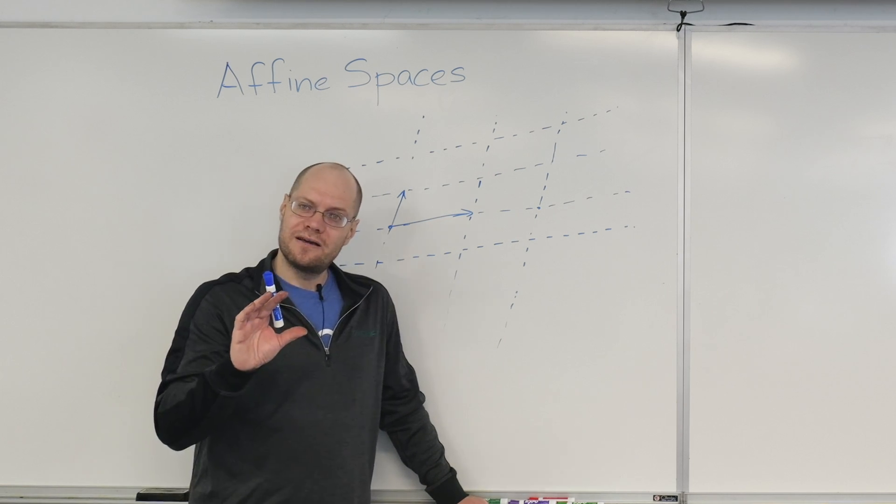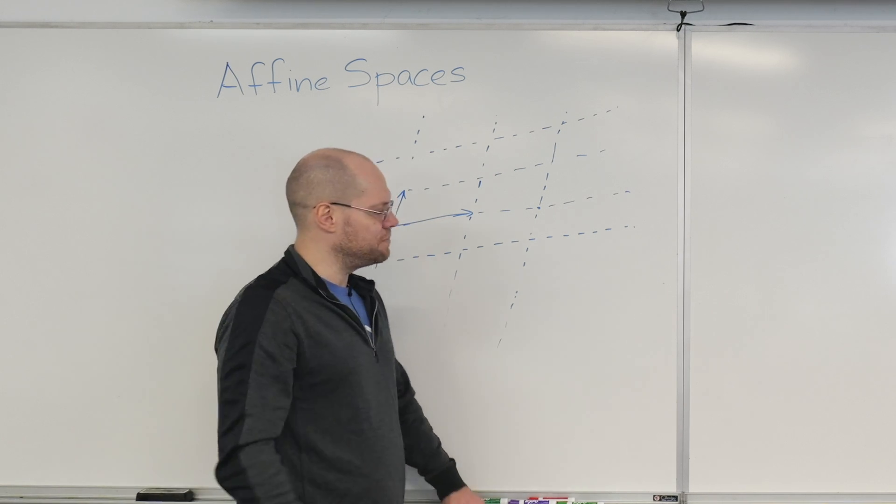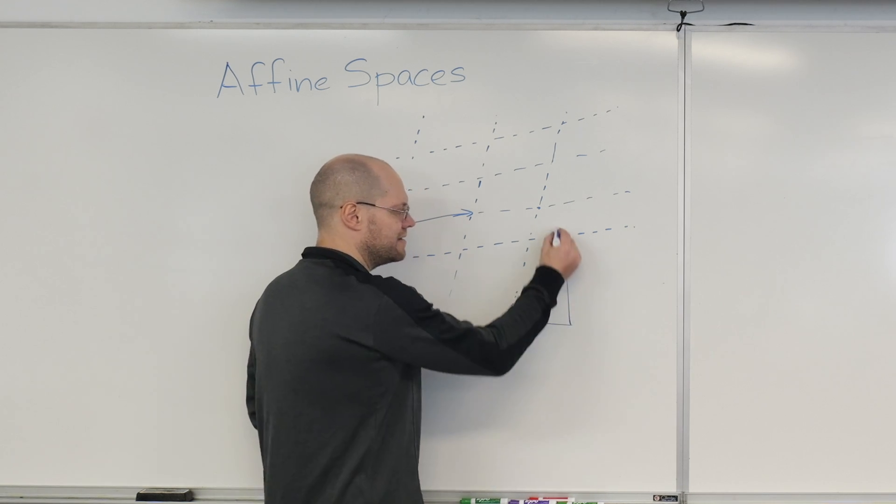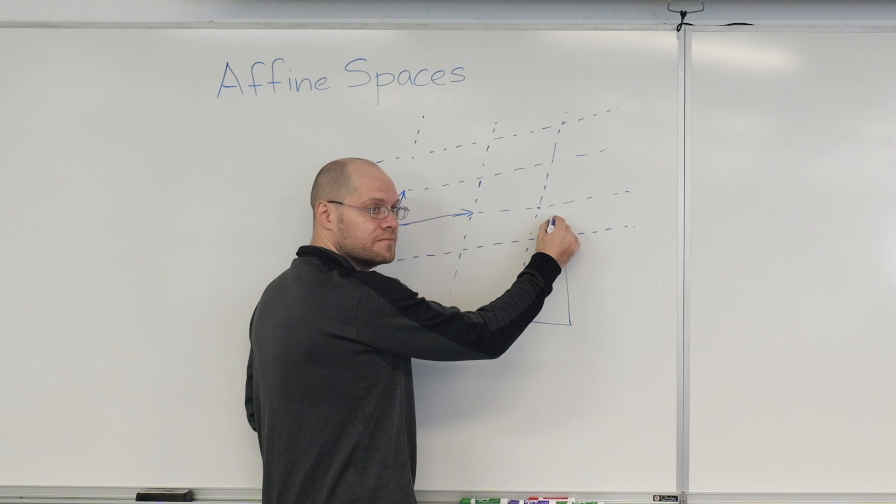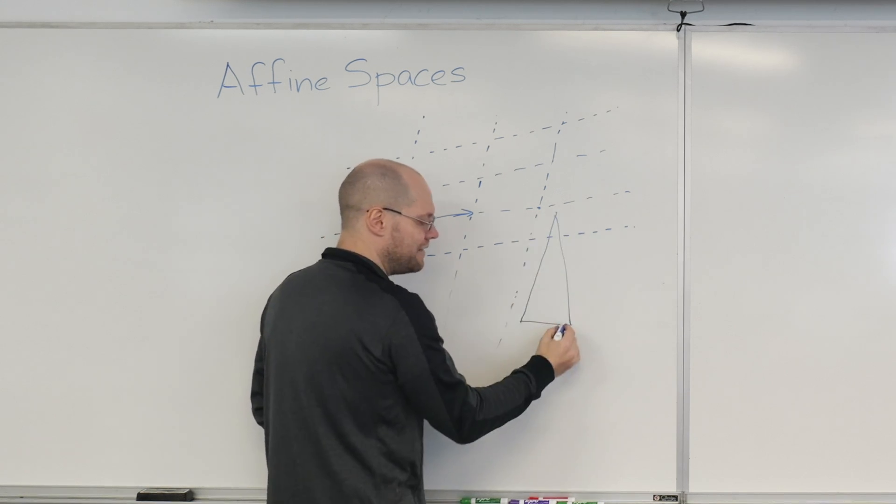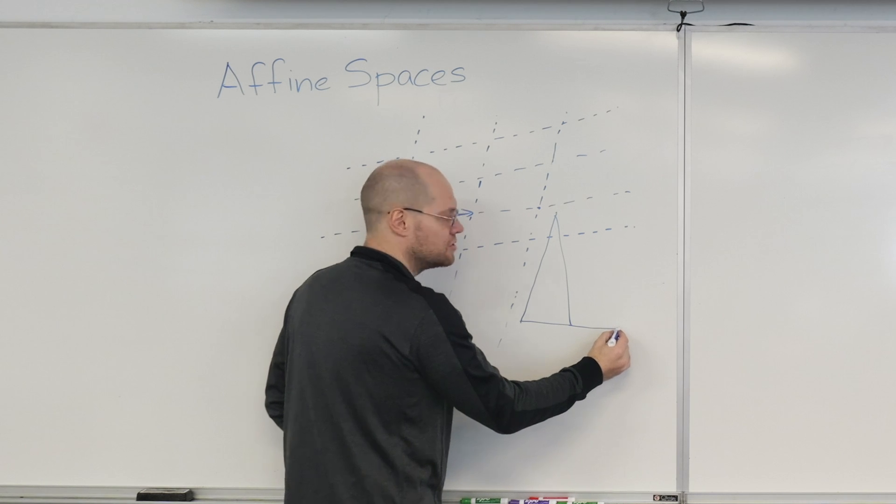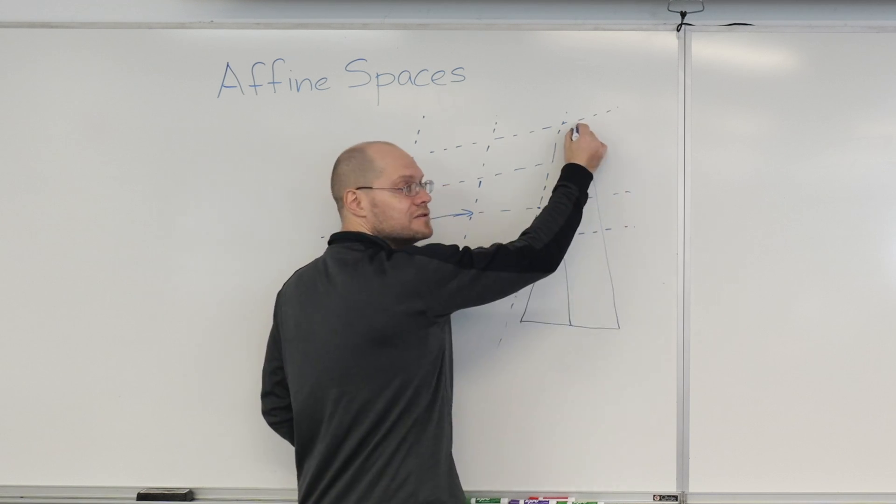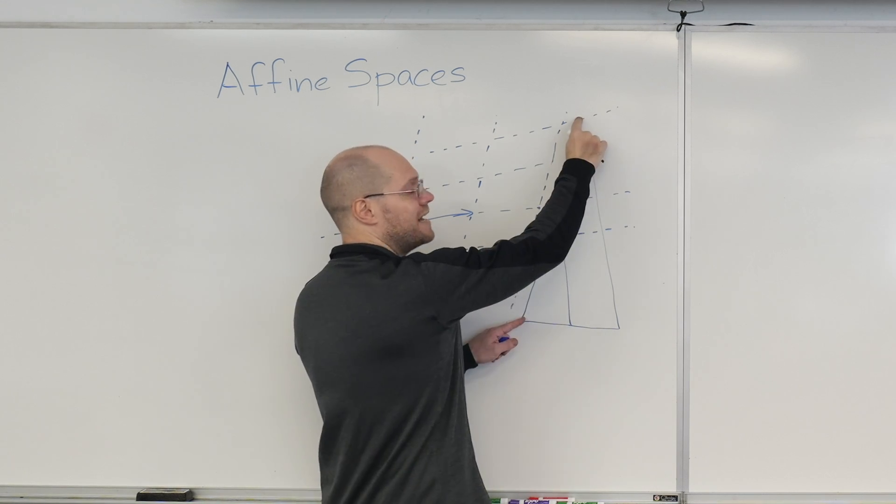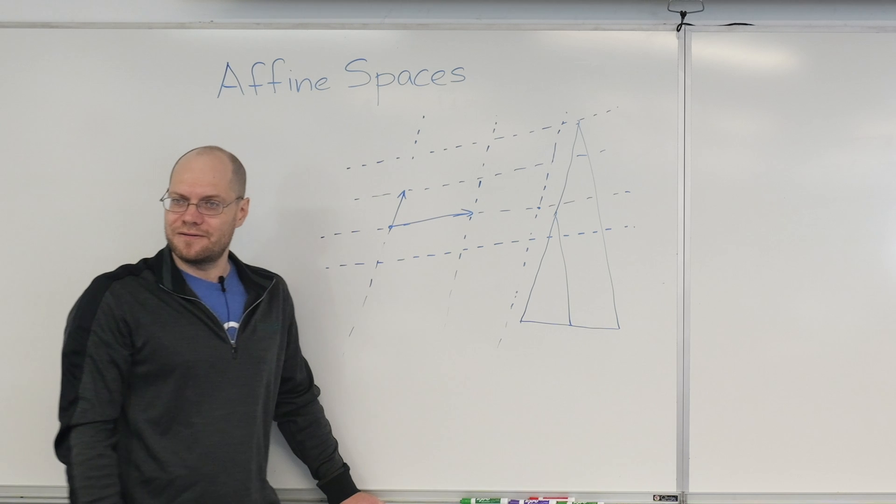And you could even make a more advanced statement. You could say that going 2 avenues over and 10 streets up, whatever distance this ends up being, is half the distance of going 4 avenues over and 20 streets up. Now, you don't know what this distance is or what that distance is, but you can still compare them.